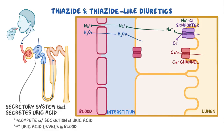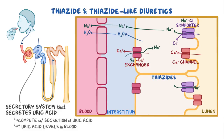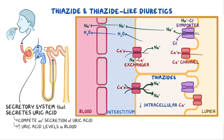Once in the cell, calcium is transported out into the interstitium through a sodium-calcium exchanger that pumps a sodium in and a calcium out. Since thiazides decrease sodium reabsorption, there's less sodium in the cell, so the sodium-calcium exchanger works overtime to pump more sodium in and more calcium out. The decrease in intracellular calcium in turn leads to more calcium reabsorption from the urine.